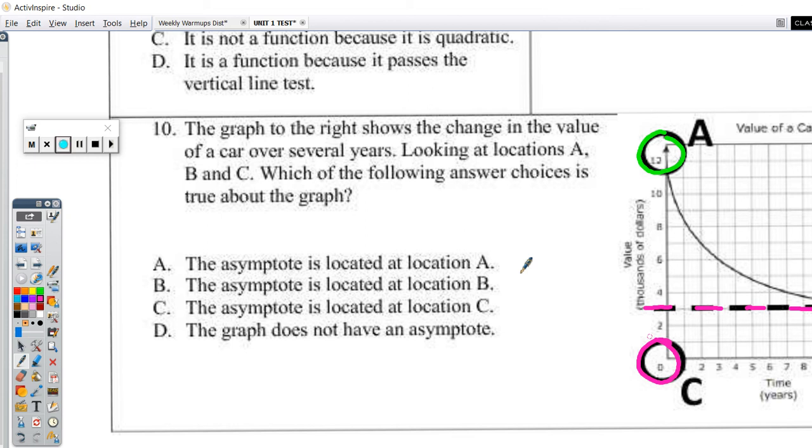If you look at this, this is actually the y-axis, and where that graph crosses the y-axis, we call that the y-intercept. So we know that the asymptote is not location A.